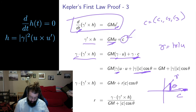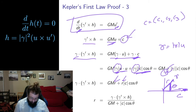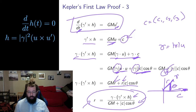U dot u equals one since u is a unit vector. Writing the length of gamma as r in polar coordinates, I can factor r out of one side and divide to solve for r. I have r and I have theta — both depending on time as the satellite loops around — and I'm getting somewhere.